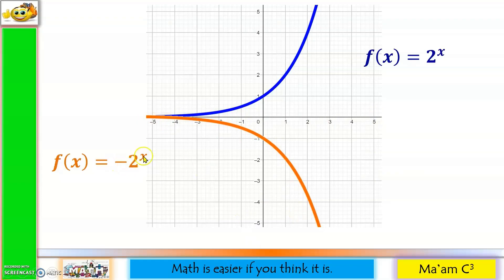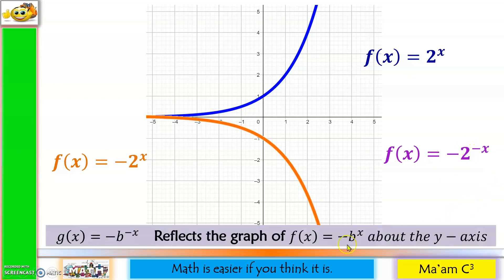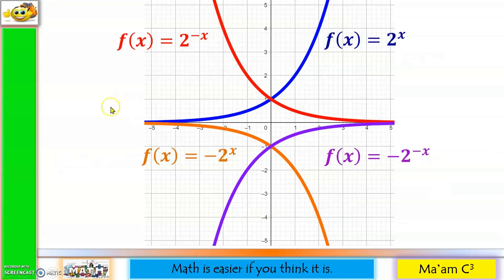Now let us continue. We already have negative 2 raised to x — this is the orange graph. What if I want to make my exponent negative again? When we make our exponent negative, it will reflect about the y-axis. So the graph will reflect about the y-axis. Let us combine all the graphs that we formed. This is our mother function, f of x equals 2 raised to x. When we made our exponent negative, it reflects about the y-axis — that is the red one. When we make our base negative, the graph reflects about the x-axis — that is the orange one. And finally, when we make our exponent negative again, the violet graph reflects about the y-axis once more.